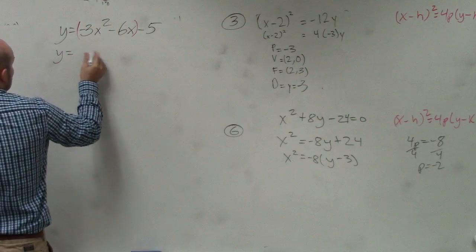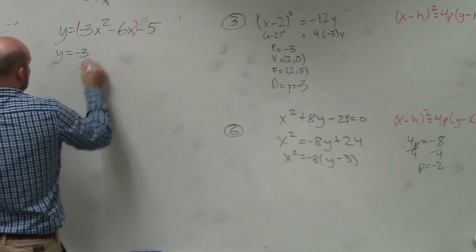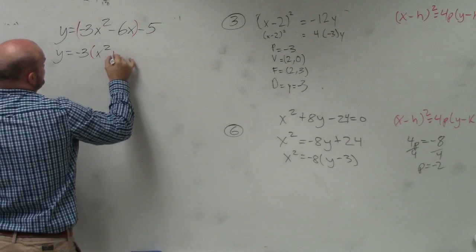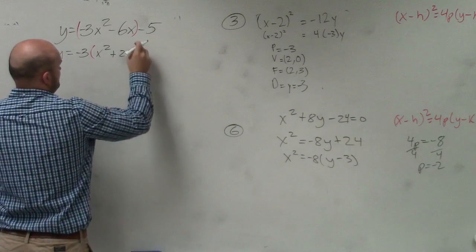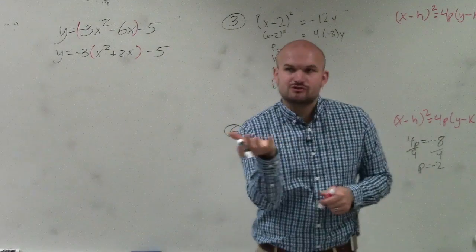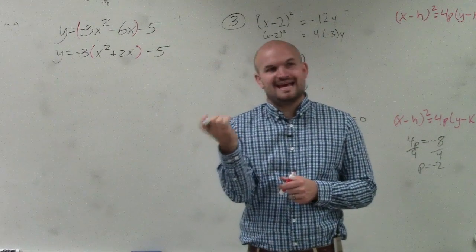So what I'll do is y equals, I'll factor out a negative 3. That allows me to now have a quadratic inside the red parentheses with a equals 1.